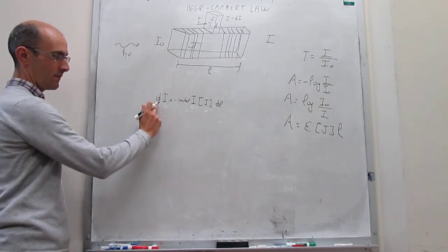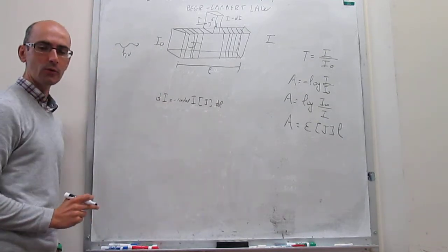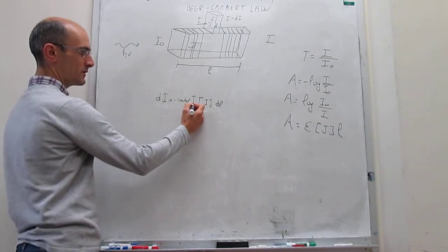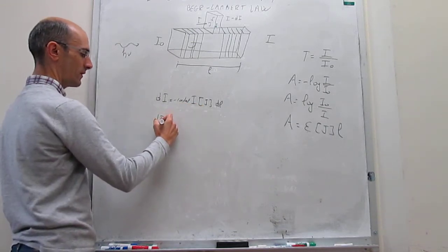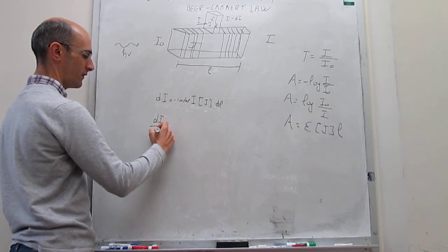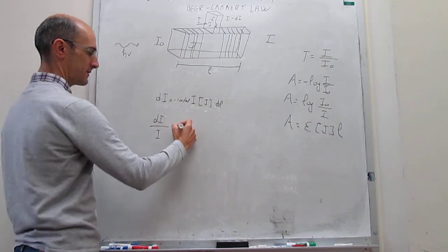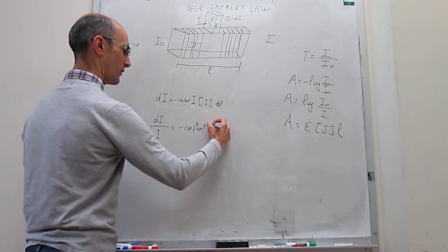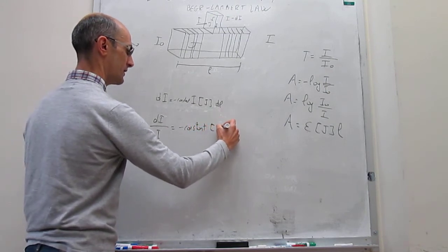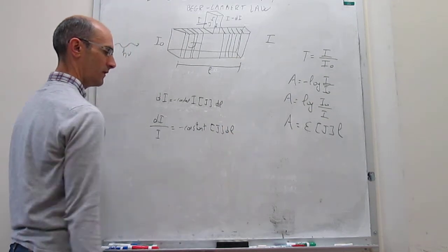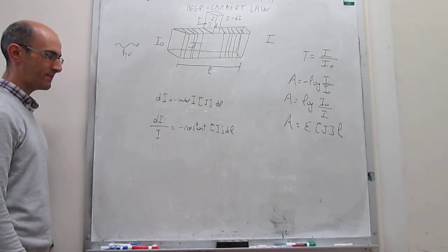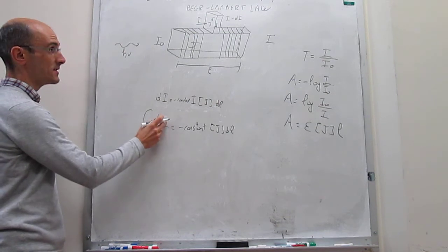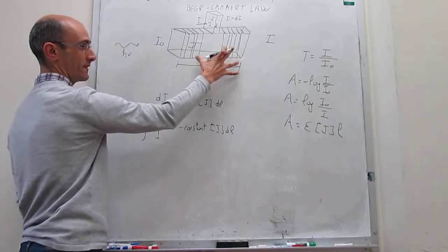This sets up a differential equation that we can solve. The first thing we do is group like terms together: dI/I on one side, equal to minus constant times concentration of J times dl. Now we have the terms separated and we're ready to integrate to calculate how the intensity changes not just in a slice but across the entire cuvette.